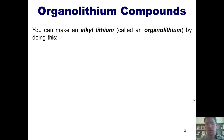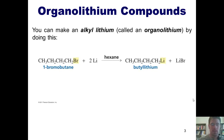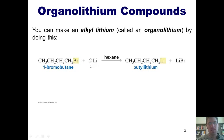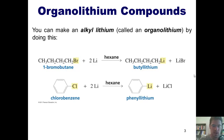You can make an organolithium compound, also called an organolithium, by doing this. First, you take an alkyl halide, such as this alkyl bromide, and react it with two equivalents of lithium metal. What it ends up doing is placing whatever alkyl chain — in this case a butyl chain — on the lithium. Another example: I take chlorobenzene, react it with two equivalents of lithium, and generate phenyl lithium.